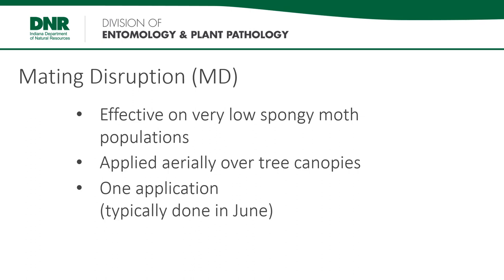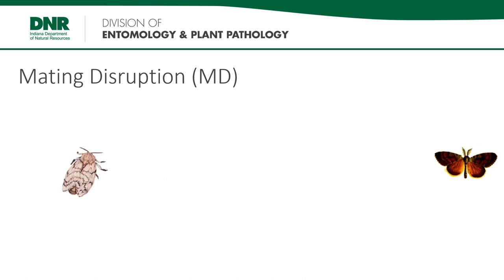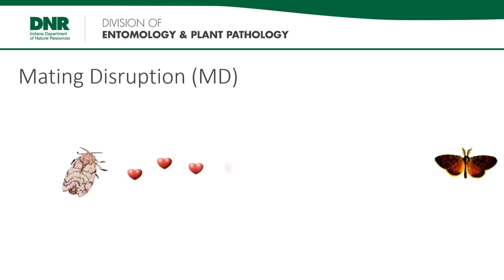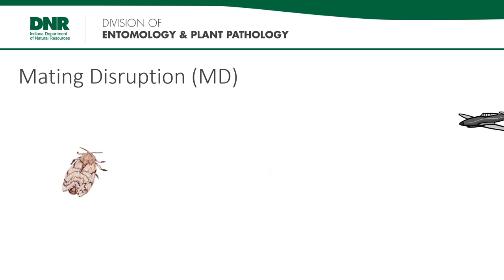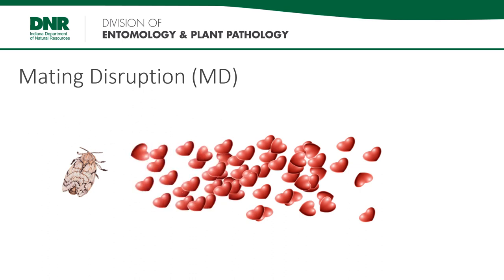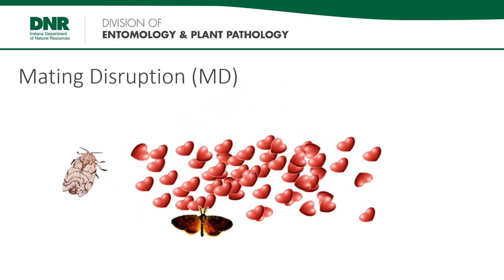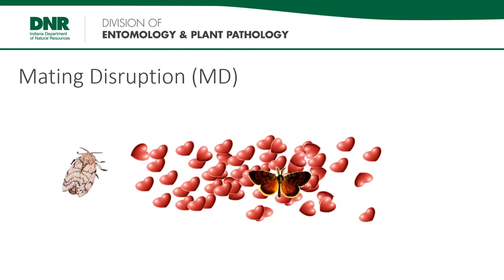Mating disruption, or MD, is used in very low Spongy Moth populations. It is applied over tree canopies in a single application, typically in June. Mating disruption does not actually kill living organisms — it reduces future Spongy Moth populations by decreasing the chance of mating. The female Spongy Moth cannot fly; she releases pheromones to attract a male. The large amount of female pheromones spread by aircraft overwhelms the male sensory equipment, making it very difficult for them to find females. Many males die of exhaustion before they encounter a living female moth, and unmated females do not lay viable egg masses, thus reducing future generations.